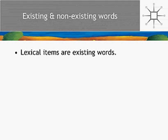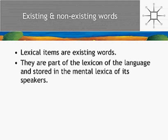Lexical items — the things that are in your mental dictionary and in other people's mental dictionaries — are existing words. A lexeme is not necessarily an existing word; it's just a word in general. A lexical item is an existing word, part of the lexicon of the language and stored in the mental lexica of its speakers.